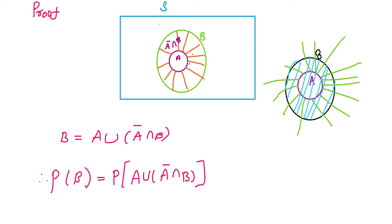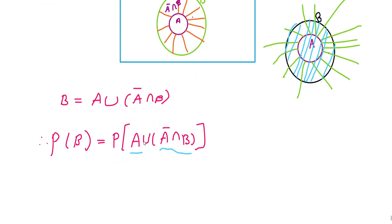From the diagram, we know A and A-bar intersection B are disjoint events. By the properties of probability, if two events are disjoint, then P of A union B equals P of A plus P of B. So P of B equals P of A plus P of A-bar intersection B.